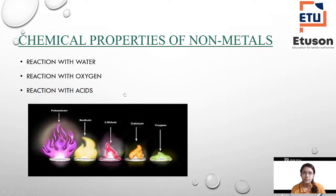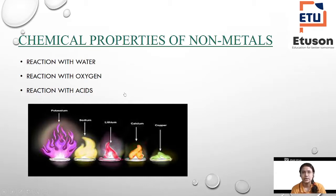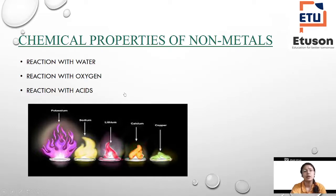Now we will be reading chemical properties of non-metals. In the previous class we have already read chemical properties of metals — how metals react with acid, with water, with air, and so on. Today we will study how non-metals react with water, with acid, and with oxygen. So first we will read reaction with water.